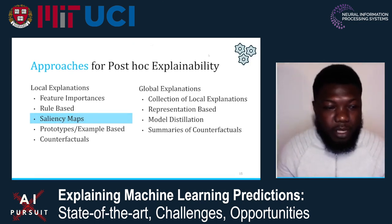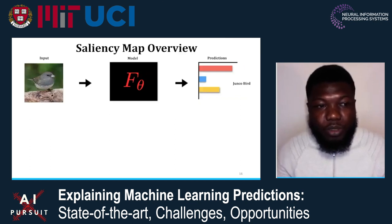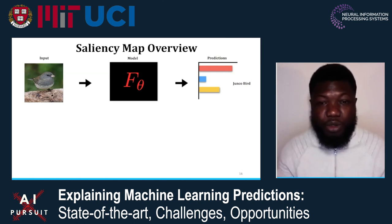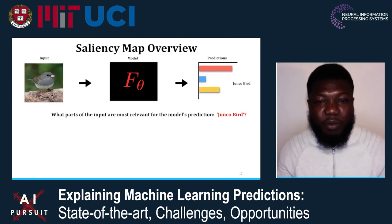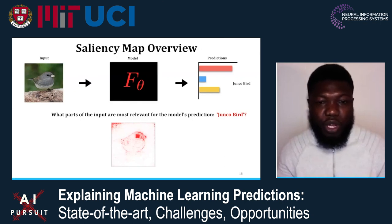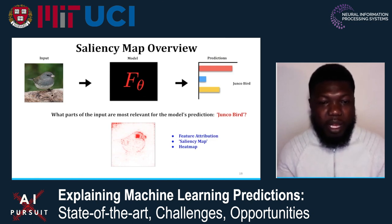We'll now discuss saliency map techniques, which are a particular kind of feature importance method. The setting we'll consider is a model Fθ — think of this as your favorite deep network, like Inception V3, ResNet, or VGG16 — and this model gives a prediction of Junko Bird on a particular input. One question we might be interested in is: what are the parts of this input that the model relies on to give the prediction Junko Bird? One kind of answer is a heat map showing the relevance of each input dimension toward the output prediction, and this is exactly what saliency map techniques provide. They're often called feature attribution methods or heat maps in the literature.